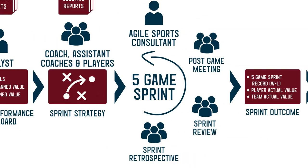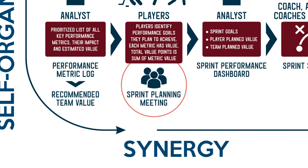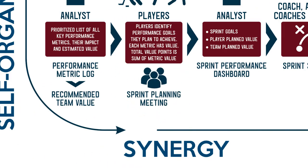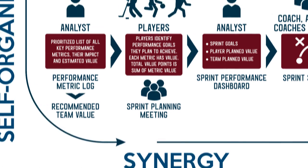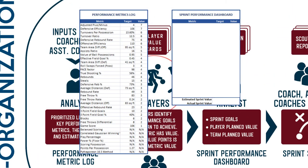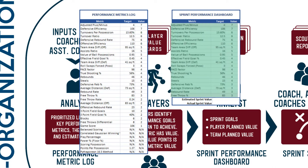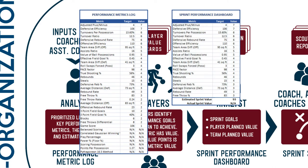The team performs a series of sprints, or 10-game intervals. Each sprint is preceded by a sprint planning meeting, attended by the coaching staff, players, and lead analysts. Together, they select key metrics from the performance metrics log that the team will commit to outperforming their opponent during the sprint.